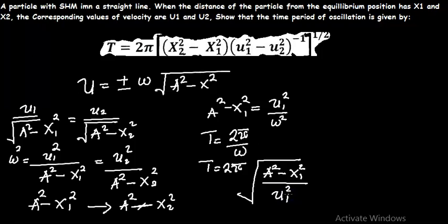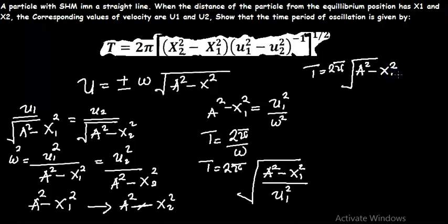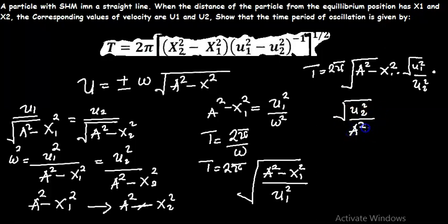Next, we need to rearrange the equation to match the given expression. We have the time period T equals 2π over omega, which becomes 2π times the square root of A squared minus x1 squared, multiplied by the square root of v1 squared, divided by v2 squared, further multiplied by the square root of v2 squared divided by A squared minus x2 squared.